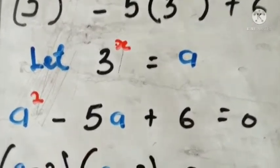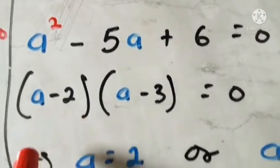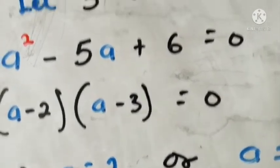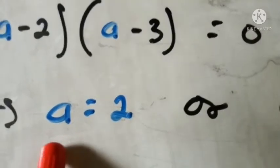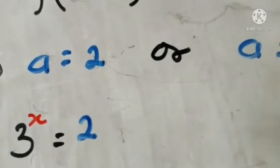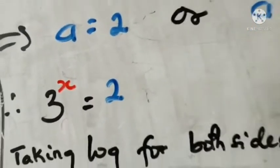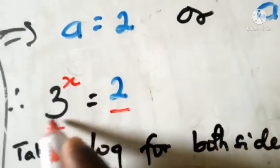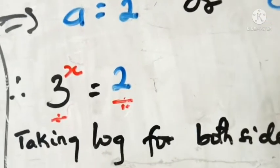This is another quadratic to solve. By the factorization method, we factor into: a minus 2 times a minus 3 equals zero. From the first bracket, a equals 2; from the second bracket, a equals 3. Now we are the ones who brought this variable a to take care of 3^x. So now we are back. Since a was 3^x: from a equals 2, we get 3^x equals 2. Pay close attention — look at what is happening. There is no way we can make the base 3 equal to 2, so we cannot simply equate exponents here.